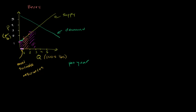Let's say this is where supply equals demand — that is the market price. Let's make the math simple and say the price is $4 and the quantity supplied is 4,000 pounds. The very 4,000th pound produced — the opportunity cost for them to produce it is $4, and they're getting $4 exactly for it, so they're right on the fence. But for the first 3,999 pounds, the opportunity cost of producing them was lower than the price they're getting.